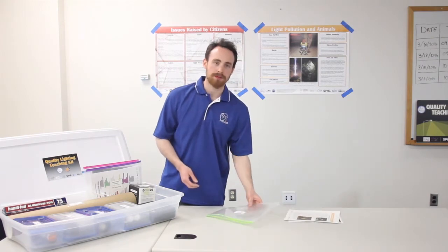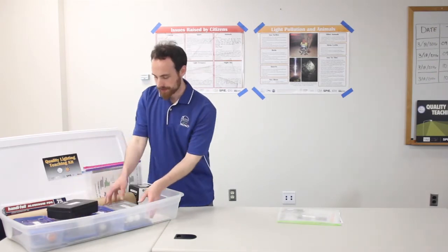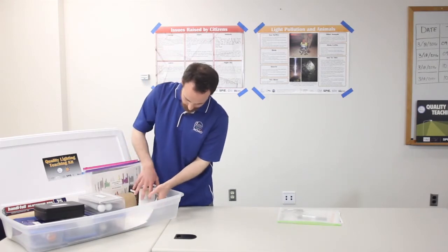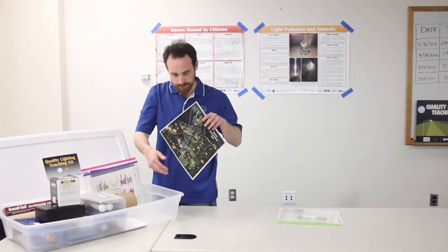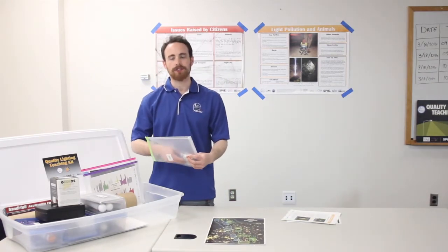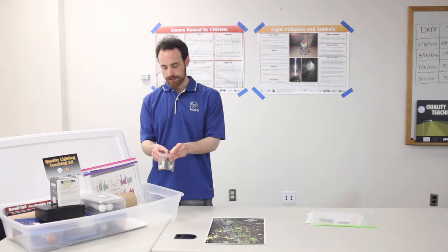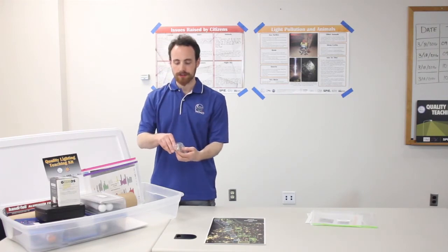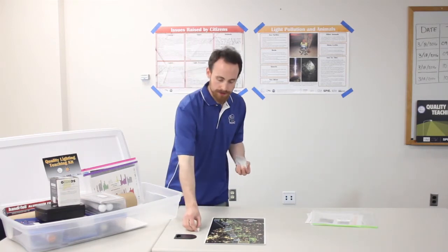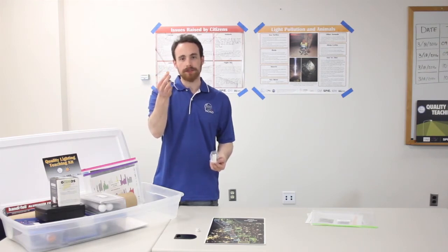After students are acquainted with the rules of the game and with the Kirtland's warblers, find the game board in the bottom of your kit and place it on the table. In addition to the fact sheet and the instructions for the game, you'll also find the pieces necessary to play inside of your envelope. This kit should include a die, which players use to roll in order to determine the number of spaces they should move on their turn. The kit also includes a number of buttons, which serve as pieces for the players.